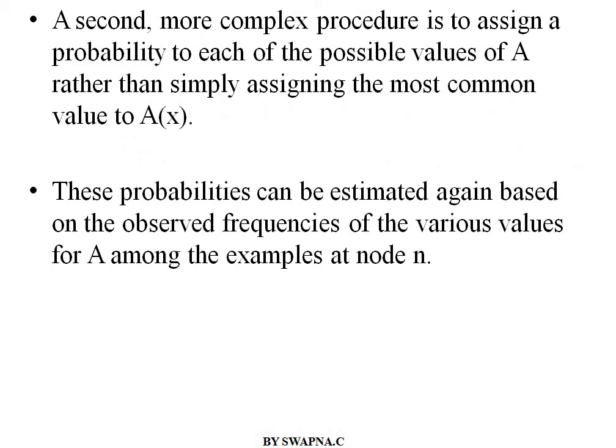The second approach is a more complex procedure. Instead of assigning the most common value, it assigns a probability to each possible value. The probability can be estimated based on the observed frequencies of the various values of a particular attribute among the examples at that node. This is the second approach to handle training examples with missing attribute values.